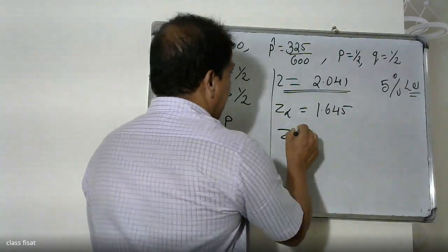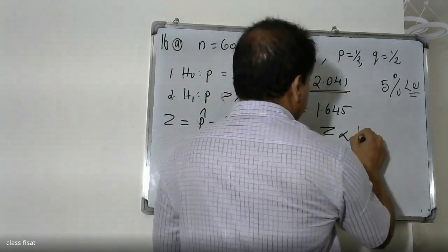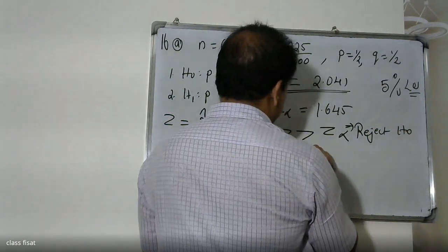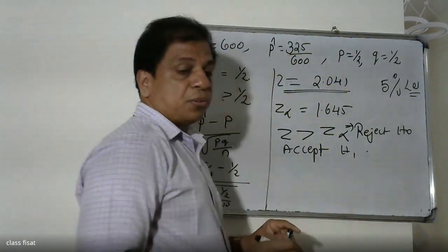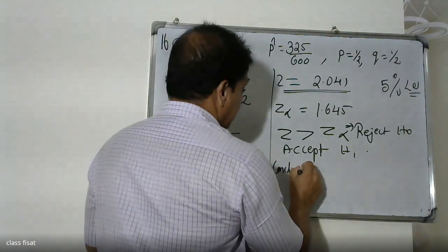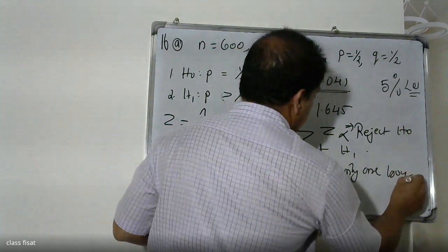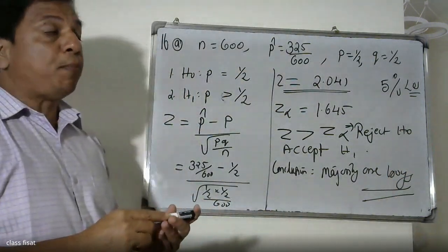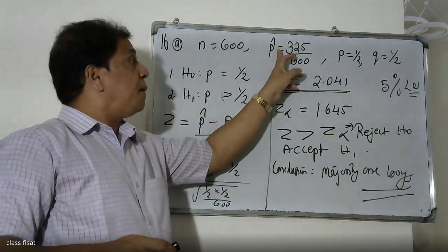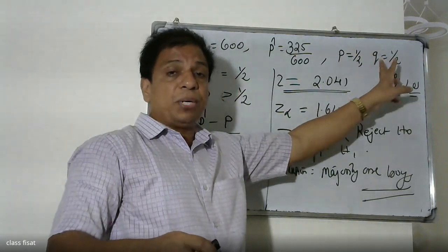Since the calculated value 2.041 is greater than the critical value 1.645, we reject the null hypothesis H0 and accept the alternative hypothesis H1. We conclude that p is greater than 0.5, meaning the majority of students in the university are boys.